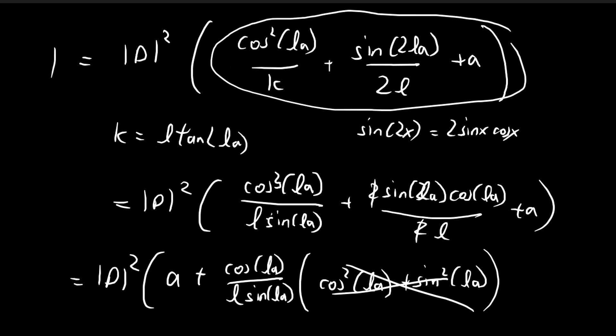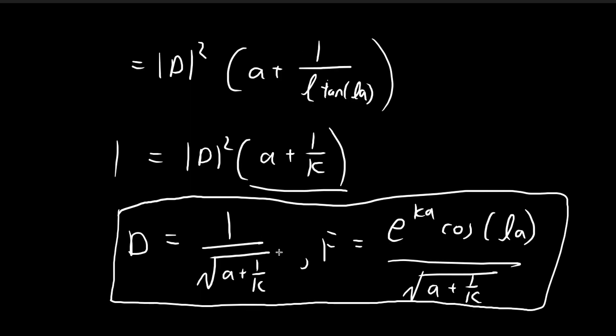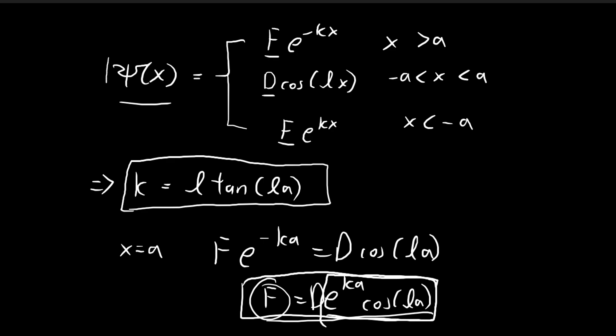So when we're dealing with xi of x, we have this equation that would allow us to deduce what the energy levels are. Once we've deduced what the energy levels are, we just take the energy levels, we get our k and our l, and then we substitute it into these two formulas, which gives us f and d. And then using those values of f and d, we would have a xi of x that is normalized.